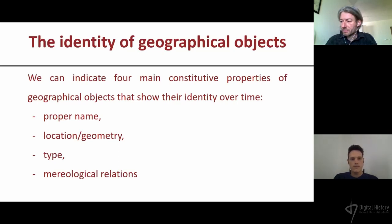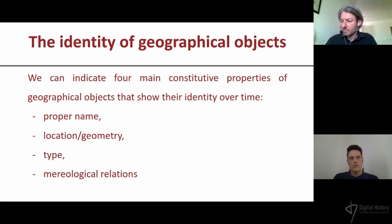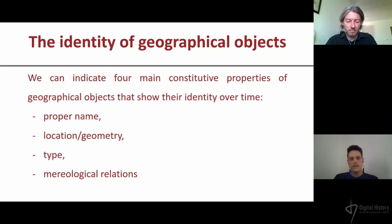I can give a modern example: Kiruna city in northern Sweden, which is actually moving right now a couple of kilometers to the north because the location of the coal mine is changing. They are moving the city, but everyone perceives it as the same city. The type can also change — a village can become a city and vice versa.